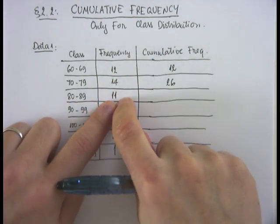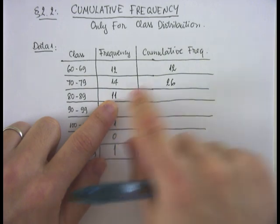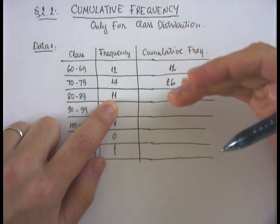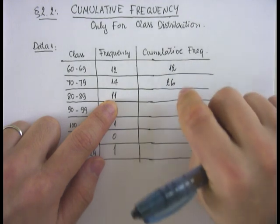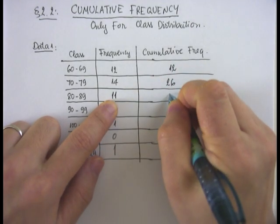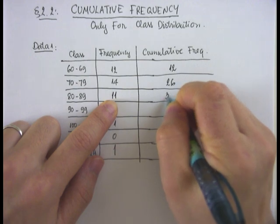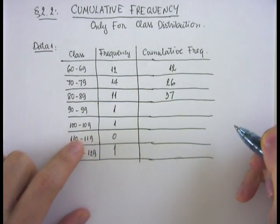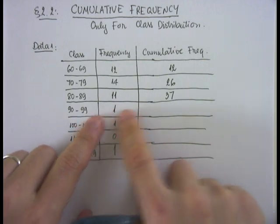Looking into the third class, the actual class itself has frequency 11, but together with all the frequencies of other classes below it, it's 26 cumulatively plus 11, so now cumulatively we have 37.